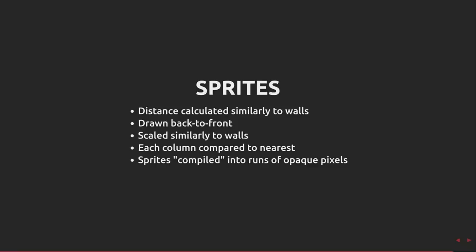One finesse for sprites is to support transparent pixels, and a pre-compilation stage looks for runs of opaque pixels in the sprites and only emits code to draw the opaque parts.